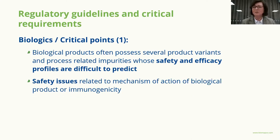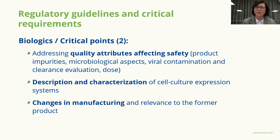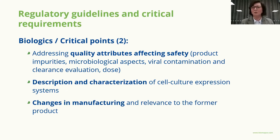For biologics, critical points include that biological products often possess several product variants and process-related impurities, which are relevant to safety and efficacy profiles and are difficult to predict. Therefore, safety issues are particularly important for biologics, related to the mechanism of action and immunogenicity. It is very important to address all quality attributes affecting safety — product impurities, microbiological aspects, viral contamination, and viral clearance evaluation.